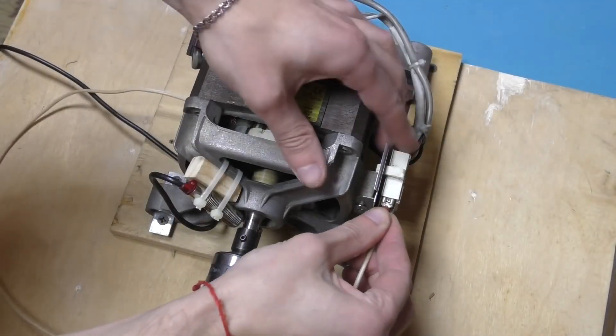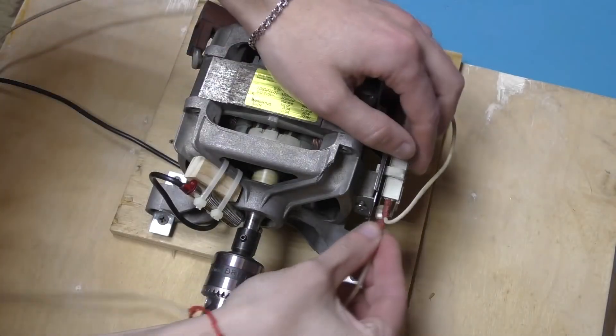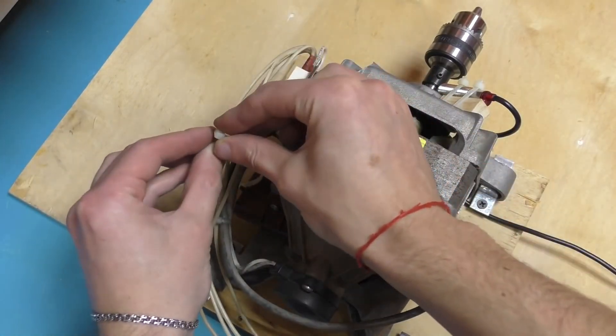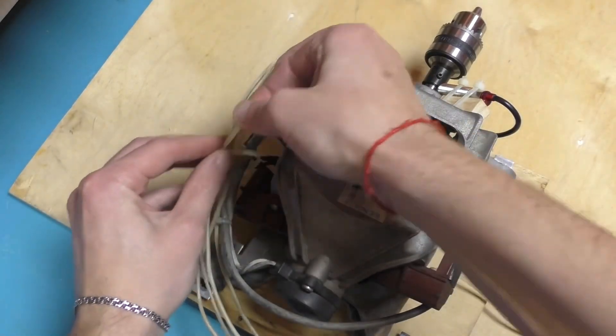We connect wires to the motor terminal. To keep the wires from getting in the way, we'll secure them with cable ties.